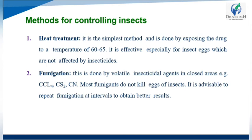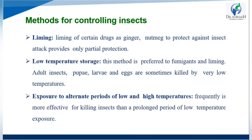Second method: fumigation — done by volatile insecticidal agents in a closed area, such as CCl4, CS2, and HCN. Most fumigants do not kill the eggs of insects. It is advisable to repeat fumigation at intervals for better results. Third method: liming — certain drugs like ginger and nutmeg are treated with lime to protect against insect attack, providing only partial protection.